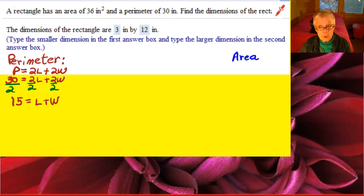The other formula we're going to use is the formula for the area of a rectangle because that was the information we were given. L times W, length times width, equals area. So in this case, L times W is going to equal 36.